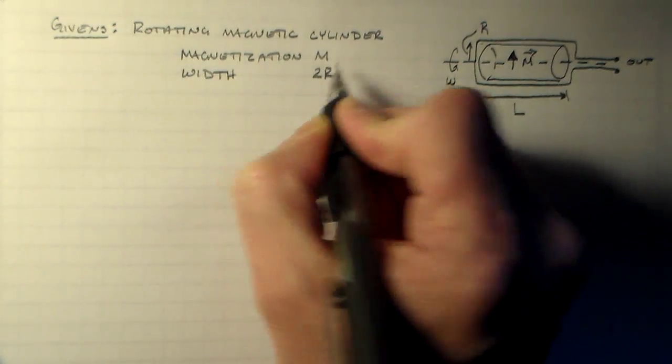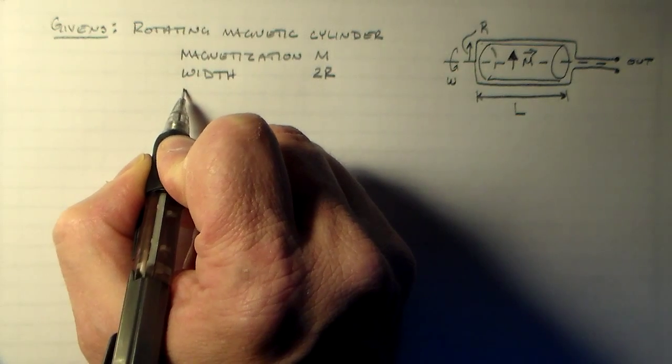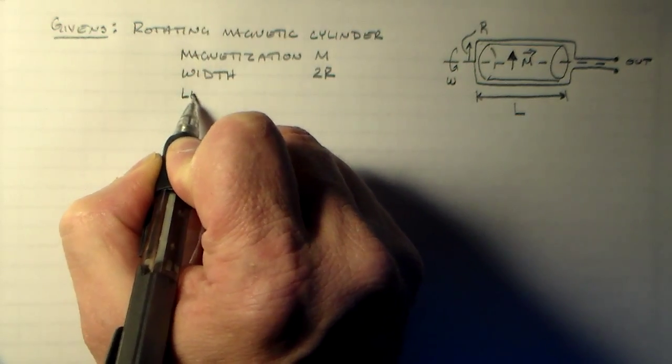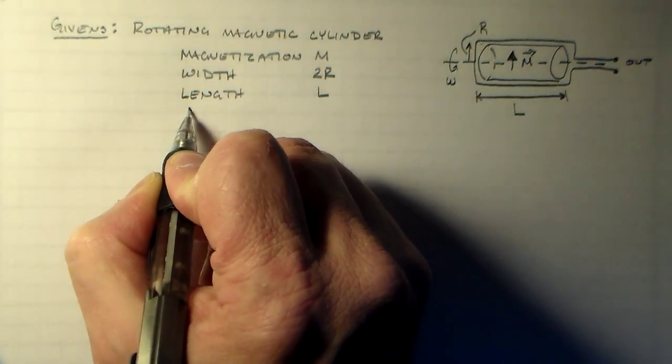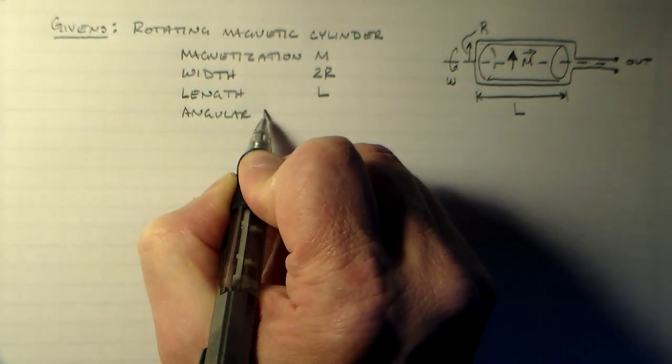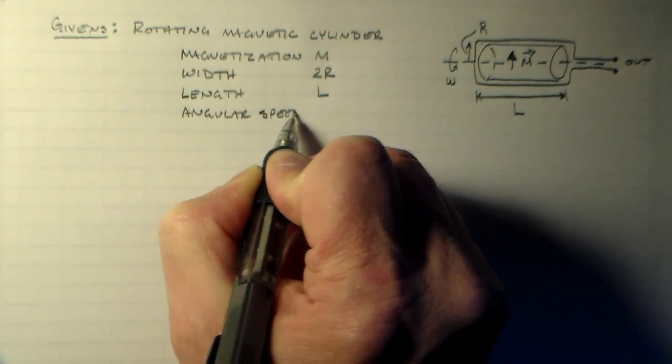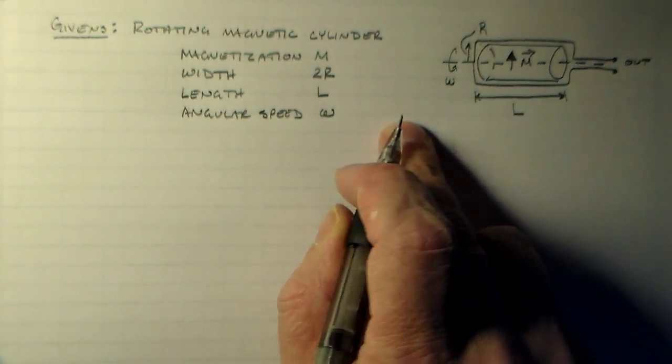It has a width 2R, twice the radius. I should have used radius but we'll be happy with that. And it has a length L. And it has an angular speed Omega. We've already sort of put all those down already, but now we have a nice convenient list.